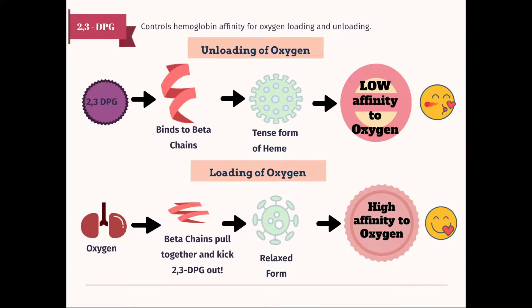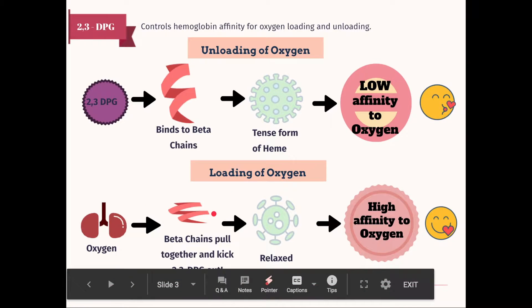And so this is how I would think this whole process is like. So when 2,3-DPG binds to your beta chains, it gives away the oxygen. So your heart here is the oxygen is giving it away. The heme is giving it away. As for loading of oxygen, the beta chains pull together. So it's more relaxed, more spacious. And your oxygen stays with you. So your hemoglobin is happy and it's keeping its oxygen there.